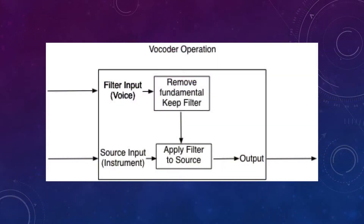The vocoder is essentially an application of source-filter theory. It's an electronic device or software that uses two inputs: one acts as the source, and the other acts as the filter. Most often, a musical instrument is used as the source, and the voice is the filter.